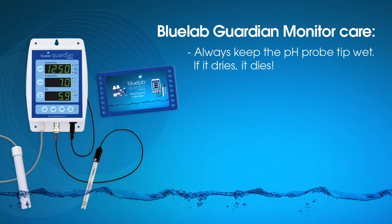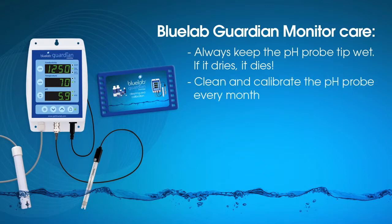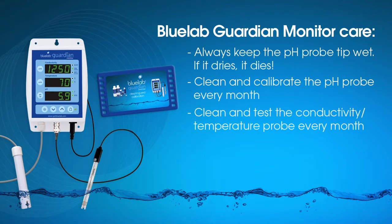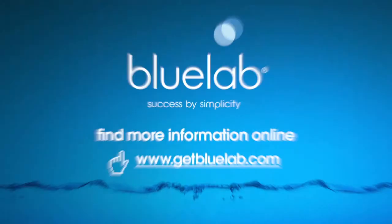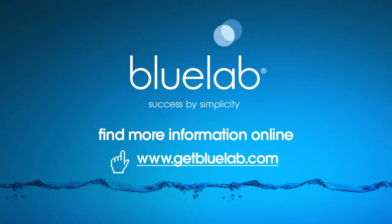Keep the pH probe tip wet — if it dries, it dies. Follow the full cleaning procedure for both probes each month to ensure accuracy. You can watch the Bluelab Guardian Monitor cleaning and calibration video online. Keep the monitor positioned in a cool, dry, clean place away from direct sunlight. For more information about Bluelab products, visit www.getbluelab.com.